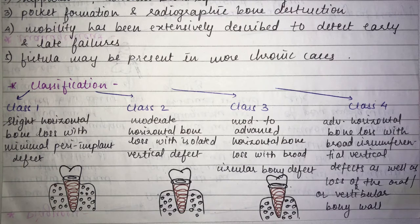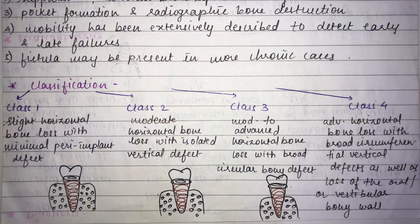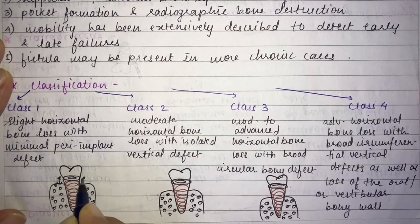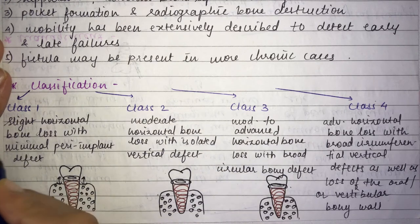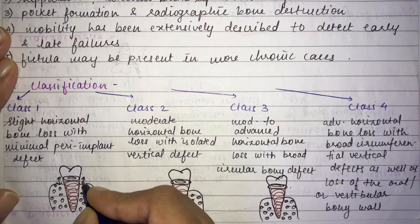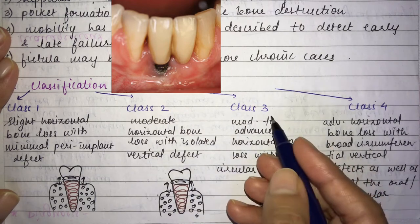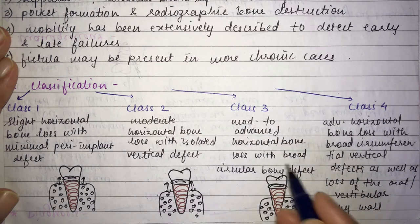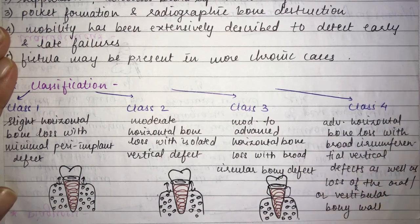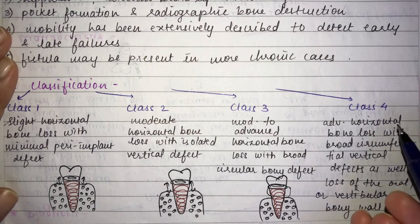Peri-implantitis is classified into four classes. Class 1: slight horizontal bone loss with minimal peri-implant defect. Class 2: moderate horizontal bone loss with an isolated vertical defect around the implant. Class 3: moderate to advanced horizontal bone loss with a broad circular bony defect around the implant. Class 4 is the worst — advanced horizontal bone loss with broad circumferential vertical defect and loss of the oral or vestibular bony walls.